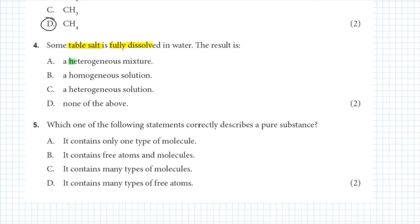In a heterogeneous mixture or solution, we can distinguish between the components. But when table salt is fully dissolved in water, we can no longer see it. The solution is therefore homogeneous, making option B the correct answer to question 4.